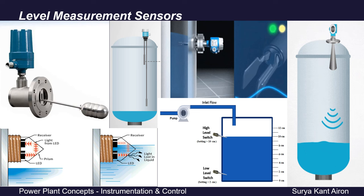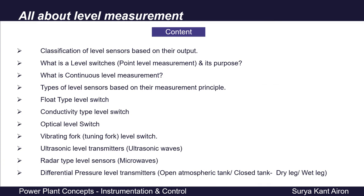Hello friends, a warm welcome to yet another interesting session on instrumentation and control in power plant industries. Our today's topic is types of level sensors used in power plant industries. In this video we will be covering the classification of level sensors based on their output, what is a level switch — basically a point level measurement and its purpose — and what is continuous level measurement.